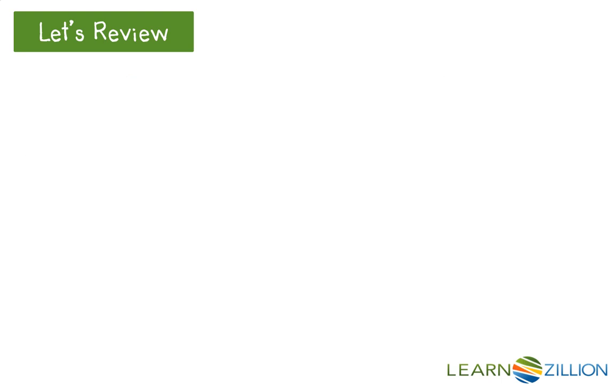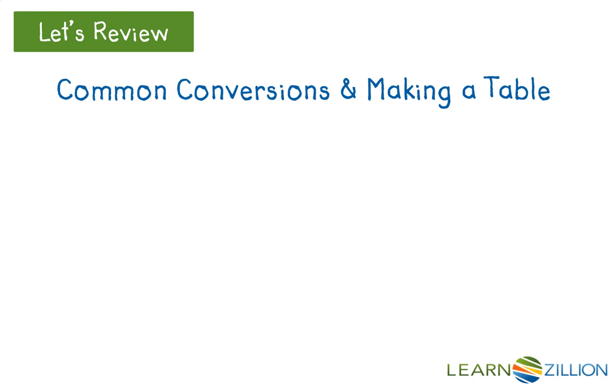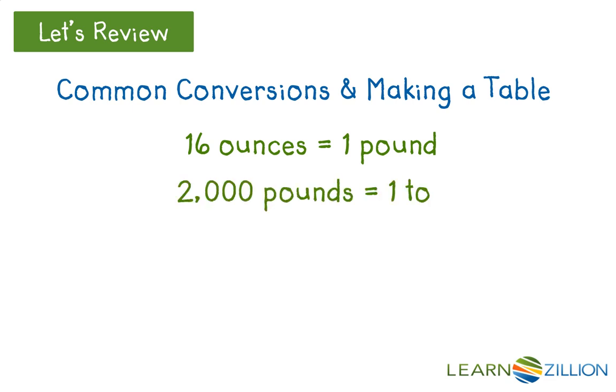Since we are going to be working with customary weight measurements, let's also review some of those common conversions and a strategy for converting. We know that 16 ounces is equal to 1 pound, and that 2,000 pounds is equal to 1 ton.